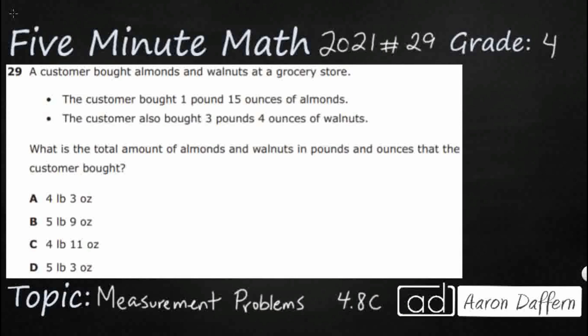So, we have a customer that's buying almonds and walnuts at a grocery store. We've got 1 pound, 15 ounces of almonds. We've got 3 pounds, 4 ounces of walnuts. So, we need the total, so that's going to be pretty easy. We're just going to add almonds and walnuts in pounds and ounces. There's no extra information.